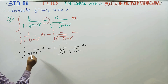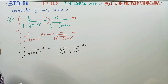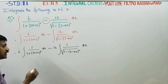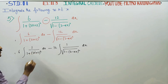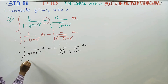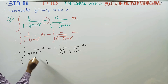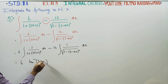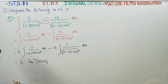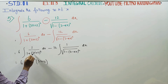The formula for 1 by (1 plus x squared) gives tan inverse of x. Here, since 3x plus 2 is a linear function of x, you can use the tan inverse formula. So the integral becomes tan inverse of (3x plus 2).